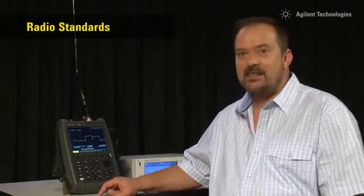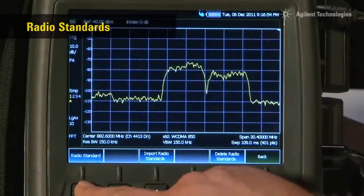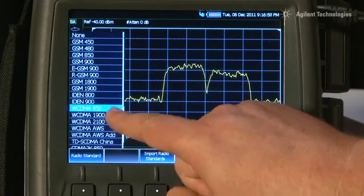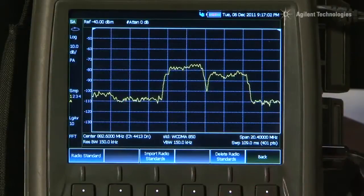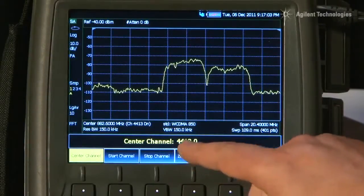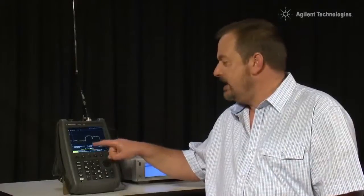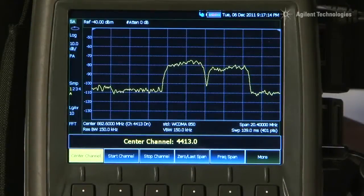If you are using a radio standard such as CDMA or GSM or WiMAX, we can select the radio standard from the built-in list here. Here I have selected WCDMA850 and you can see on the screen that the frequency is now measured in channel number rather than megahertz. This makes it very simple to change channel quickly in the radio standard that you are operating in without having to know the exact frequency of each channel.